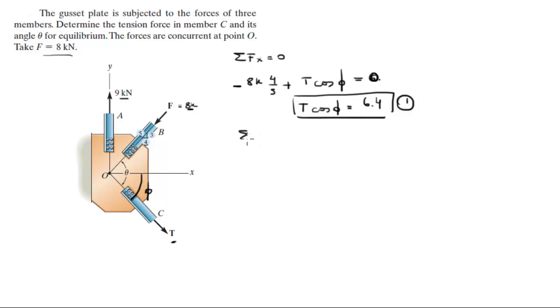Now you know that the sum of the forces in the Y is also equal to 0. I need to find another equation because I have two variables. So you know that 9 kN minus 8 kN times 3 over 5—and it's negative because it's going down—minus T sine phi is equal to 0.